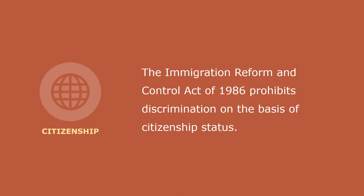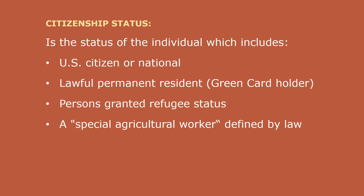The Immigration Reform and Control Act of 1986 prohibits discrimination on the basis of citizenship status. Citizenship status is not a person's national origin, but rather the status of the individual, which includes U.S. citizen or national, U.S. lawful permanent resident, a green card holder, persons granted refugee status in the United States, and a special agricultural worker as defined by law. The IRCA, under its citizenship status discrimination provisions, provides that employers cannot discriminate based on an individual's status in one of these classes unless a law or regulation requires the employer to do so.